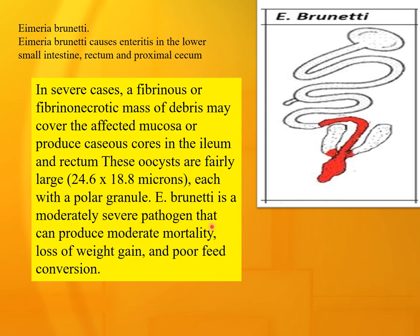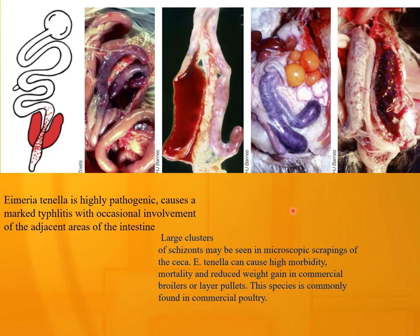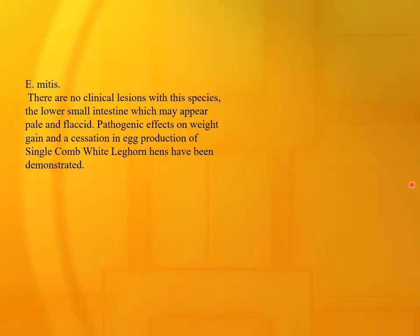Eimeria brunetti causes enteritis in the lower small intestine, rectum, and proximal cecum. In severe cases, fibrinous or necrotic masses may cover the affected mucosa or produce caseous cores in the ileum and rectum. Oocysts are fairly large, 24 to 15 microns, each with a polar granule. Eimeria mitis is a moderately severe pathogen that can produce moderate mortality, loss of weight gain, or poor feed conversion. Eimeria tenella is highly pathogenic, causing marked typhlitis — inflammation of the ceca — with occasional involvement of adjacent intestinal areas. Large clusters of schizonts may be seen in microscopic scrapings of the ceca. Eimeria tenella can cause high morbidity, mortality, and reduced weight gain in commercial broilers or layers.